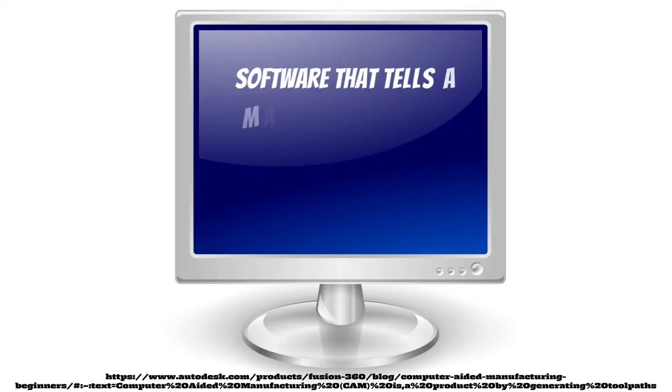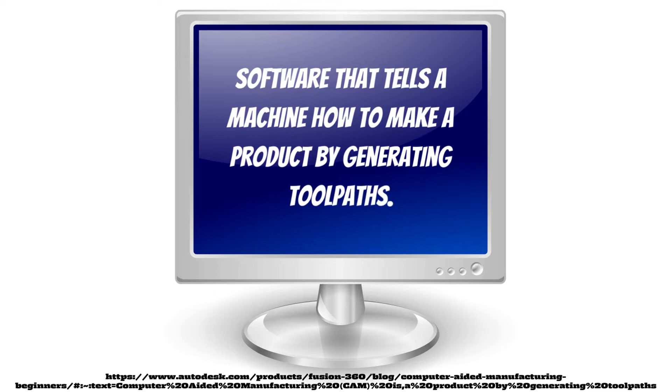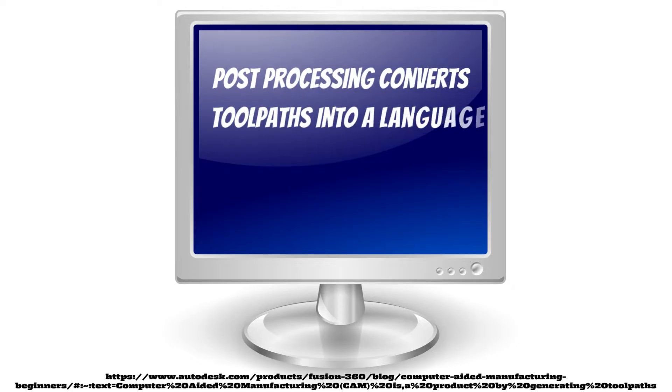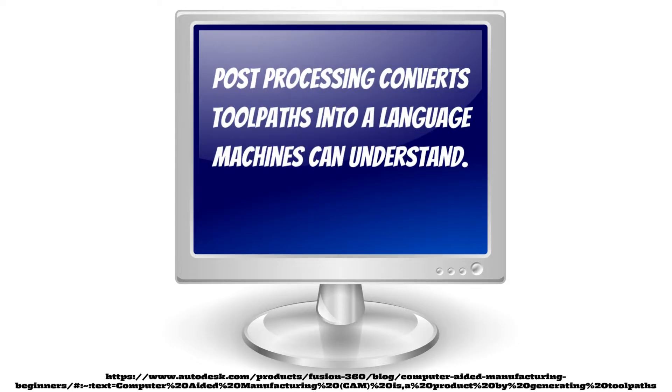Let's move on to CAM. Without CAM there's not much use for CAD — it is the next stage of the production. CAM stands for Computer Aided Manufacturing; it's the use of software and computer-controlled machinery to automate a manufacturing process. You will need three components for a CAM system to function: software that tells a machine how to make a product by generating toolpaths; machinery that can turn raw material into a finished product; and post-processing, which converts toolpaths into a language machines can understand.